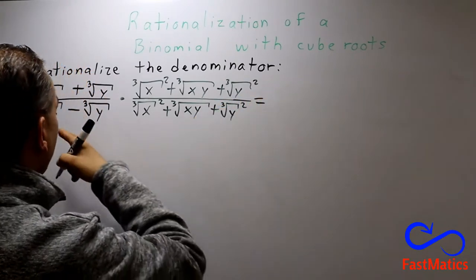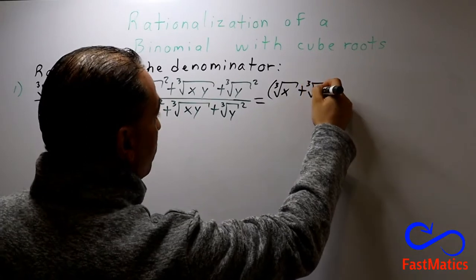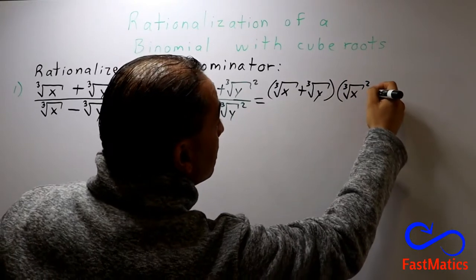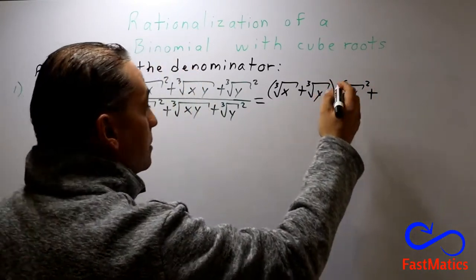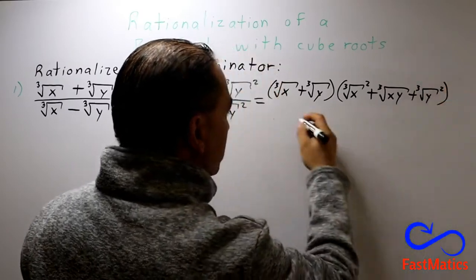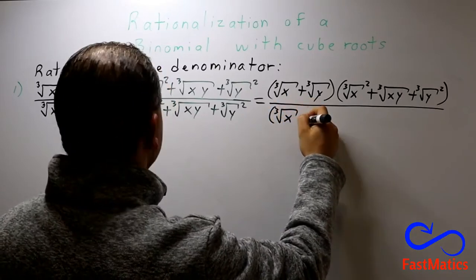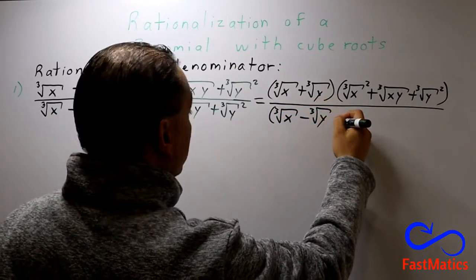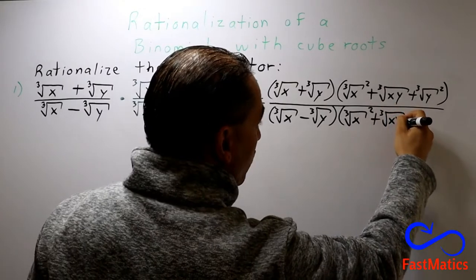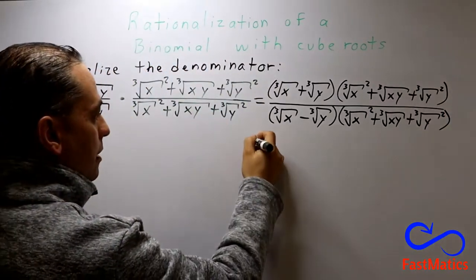So, now we multiply the cube root of x plus the cube root of y, times the cube root of x squared plus the cube root of xy plus the cube root of y squared. You have a polynomial times the cube root of x squared over the cube root of x minus the cube root of y times the cube root of x squared.